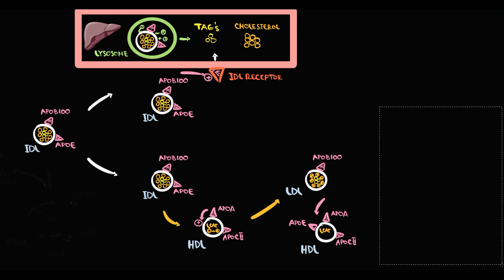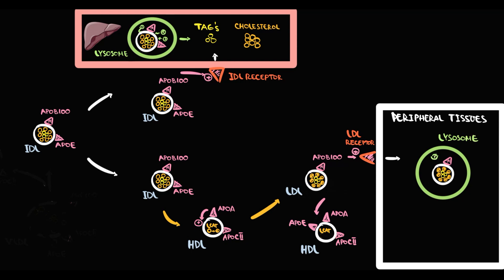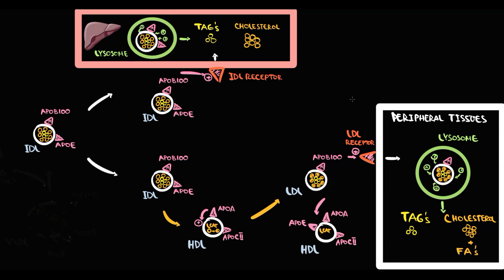LDL circulates in the bloodstream until it finds an LDL receptor on peripheral tissues. LDL binds to the LDL receptor on peripheral cells, and with binding the cell takes up the LDL particle and puts it into the lysosome. In the lysosome, the LDL particle is degraded into triacylglycerols, cholesterol, and fatty acids. This is essentially the entire pathway of lipoproteins in our organism.